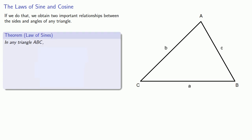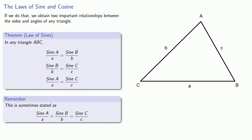The law of sines uses the sines of the angles. The sine of A over a is equal to the sine of B over b, as well, the sine of B over b is equal to the sine of C over c, and the sine of A over a is equal to the sine of C over c. This is sometimes stated as sine of A over a, equal to sine of B over b, equal to sine of C over c.